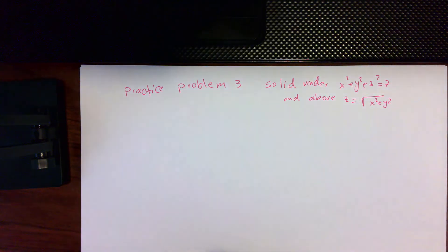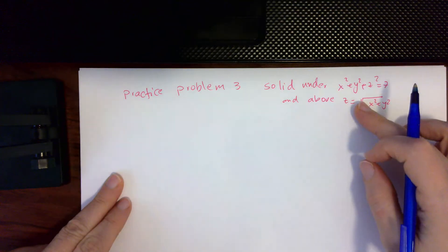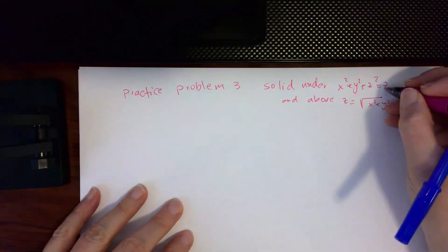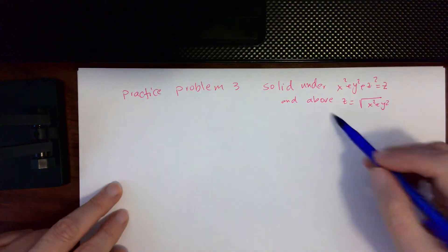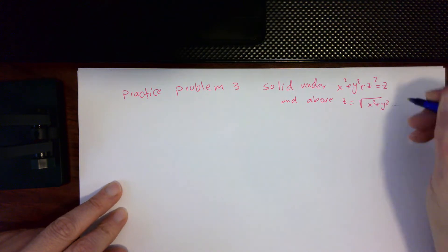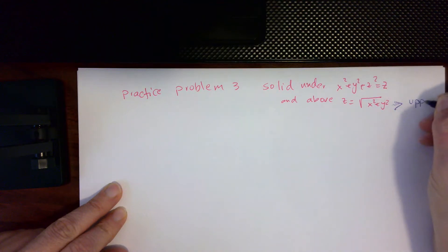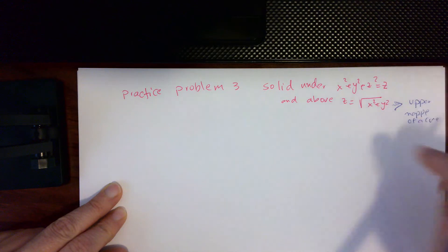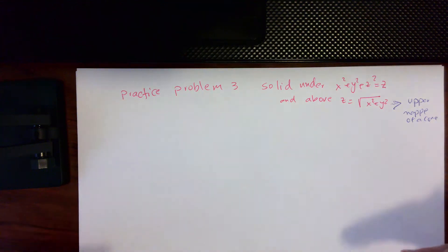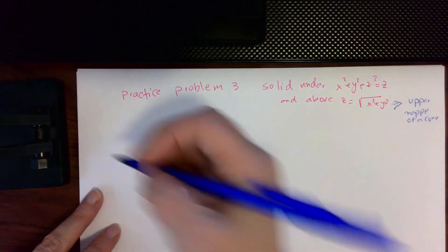We're on practice exam problem number three. We want to find the volume of the solid under a surface that turns out to be a sphere, and above another surface that turns out to be the upper nappe of a cone. We're going to set up this volume using both cylindrical and spherical coordinates. Let's start with cylindrical.